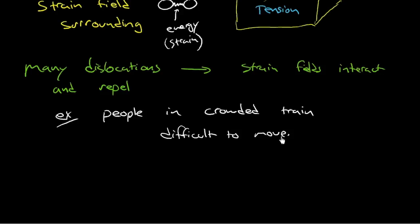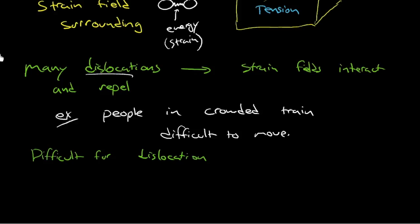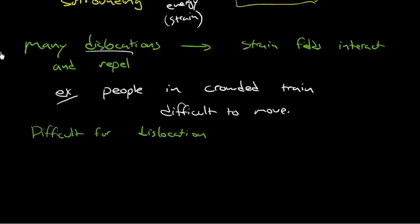And what's the result if it's difficult for a dislocation to move? If it's difficult for a dislocation to move, what do we know about dislocation movement? Dislocation movement was this linear imperfection. It's the mechanism for plastic deformation. Difficult for dislocation to move?